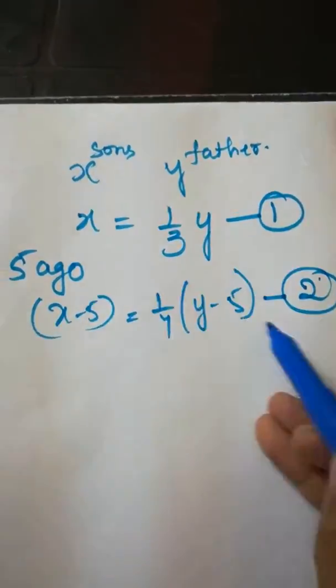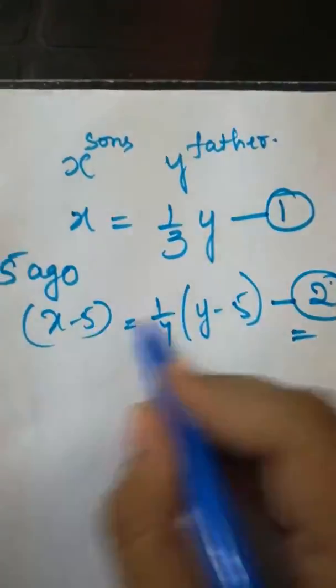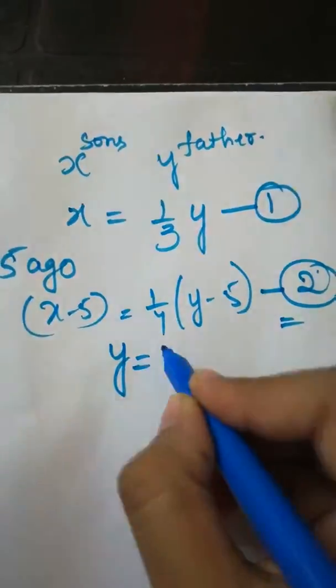Substitute X value in equation number 2. Solving these two equations we get Y equals 45.